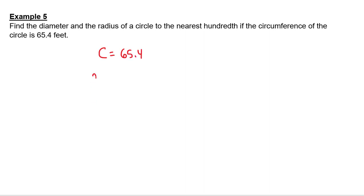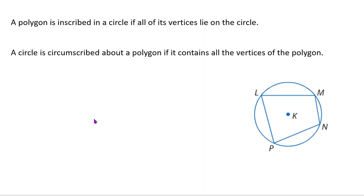So pi times my diameter is 65.4, divide by pi. And please use the pi button on your calculator, that second and the exponent button. So I get my diameter to be 20.8 feet. My radius is half of that. I don't know why I had to do that in my calculator. I didn't trust myself.